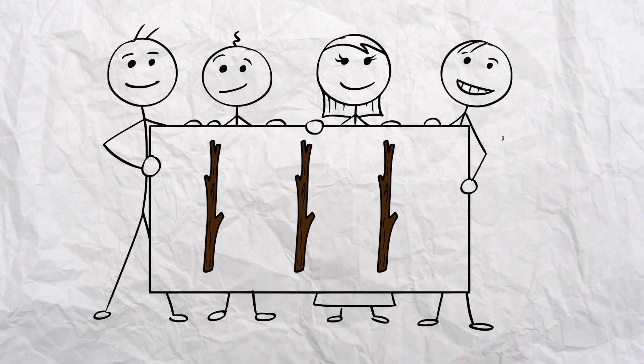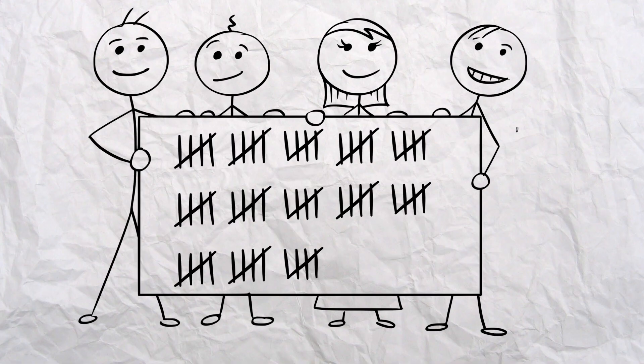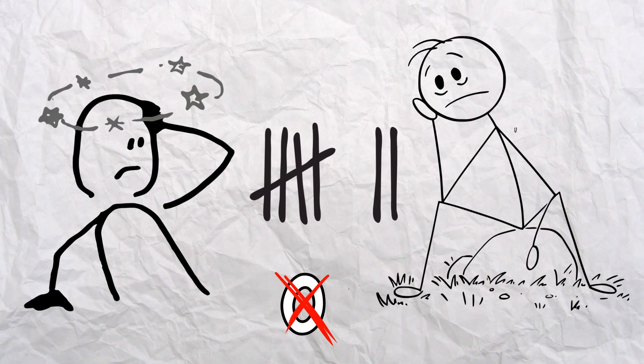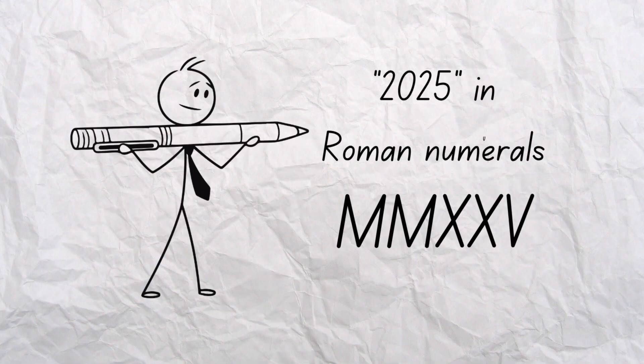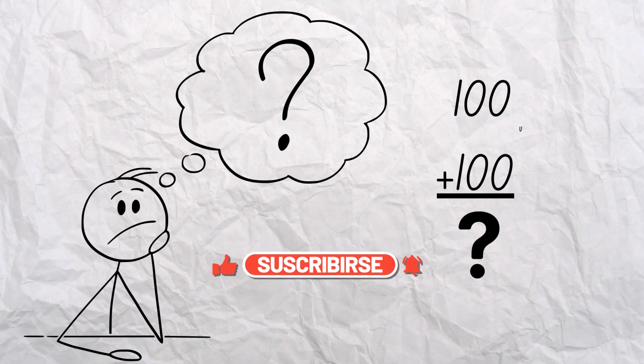Thousands of years ago, people used sticks, stones, and even Roman numerals to count. But here's the problem. The Romans had no zero. Try writing 2025 in Roman numerals. Now try adding 100 to it without using zero. It's a mess of letters and confusion.